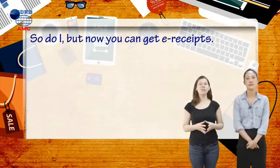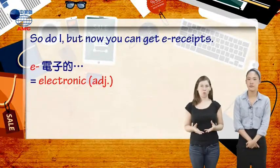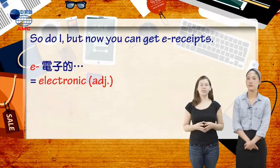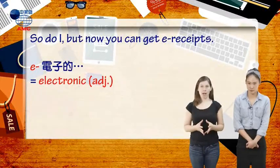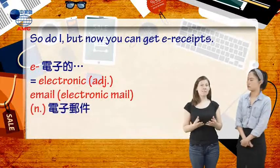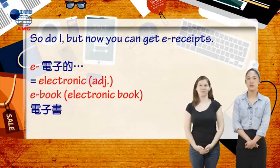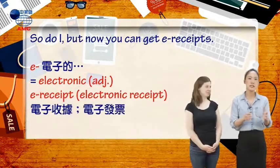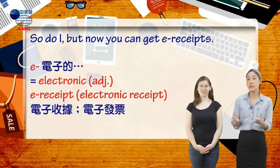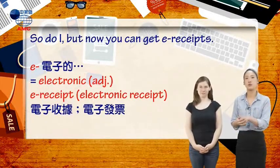Now, often, when you add the letter e to the front of a word, it means it's related to the word electronic. For example, e-mail is electronic mail, and an e-book is an electronic book. 所以我们说的e-receipts就是e-lectronic receipts, 电子发票或收据.